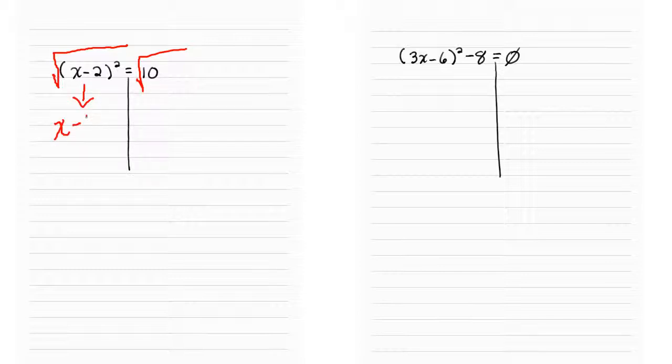x minus 2, going to equal, remember it's a plus minus square root 10. And we're just going to take the 2 here, and he's going to jump over the fence and land over here on the other side. And anytime we jump the fence, we change the sign. So now I have a positive 2 plus minus square root 10.